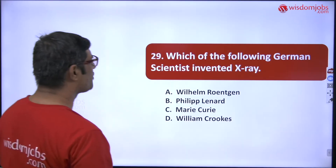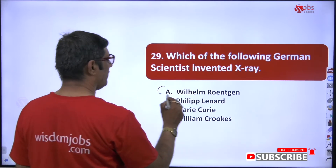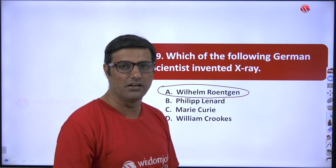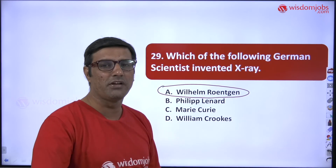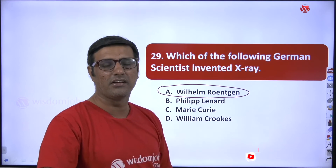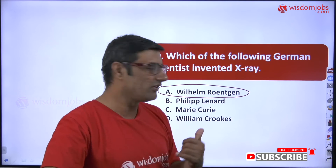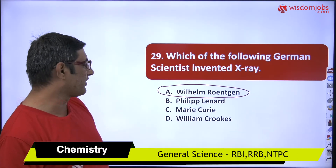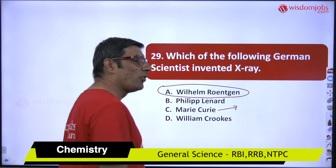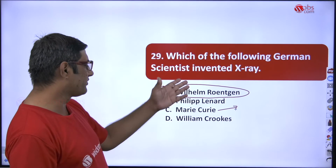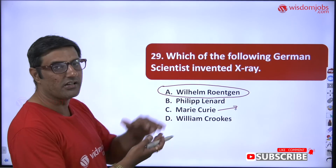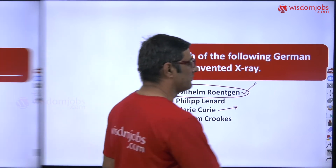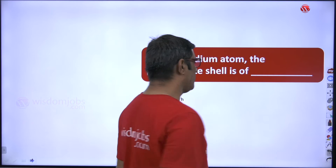Next question: which German scientist invented X-rays? The correct answer is Wilhelm Röntgen. When some emission was coming from the discharge tube, they did not know what name to give it, so they named it X-rays. Before that name, since Röntgen was the person who invented these rays, they were called by his name. Marie Curie invented thorium and radium, but not X-rays. The exact answer is Wilhelm Röntgen.